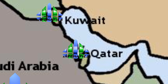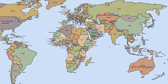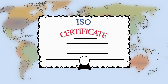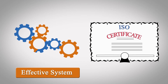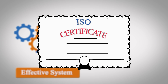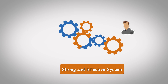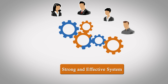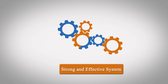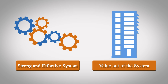always tell our clients that the end of the ISO implementation process is not just a certificate that you proudly hang on the wall. The end is how to get an effective system in place. If you get a certificate without an effective system, that is of no use. Certification is a byproduct of a strong and effective system we build in the organization.